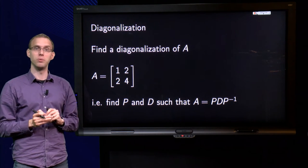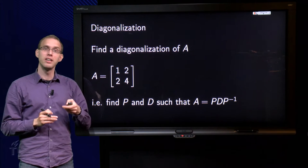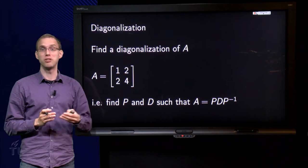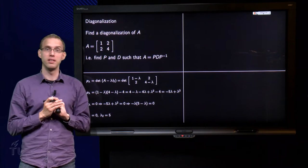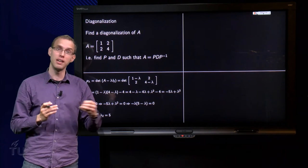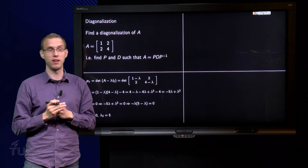What do we need to do? Well, we know the matrix D has the eigenvalues of A on its diagonal, so let's start with computing the characteristic polynomial of A in order to compute the eigenvalues of A.